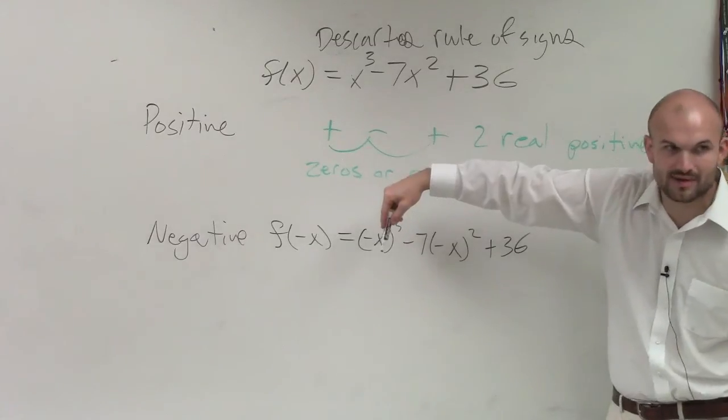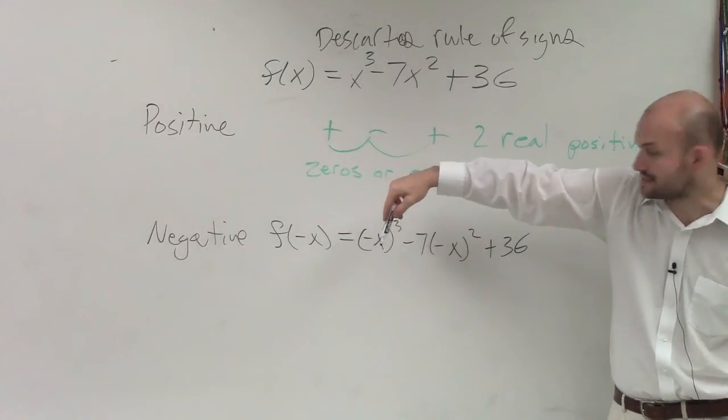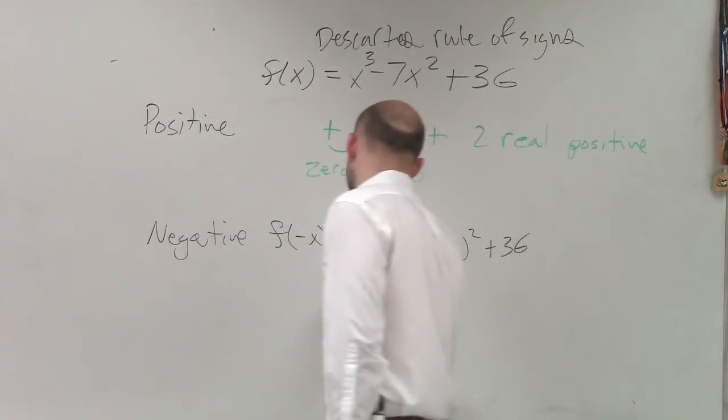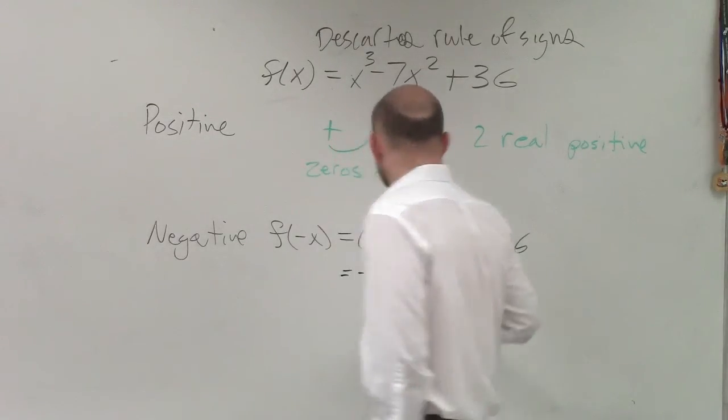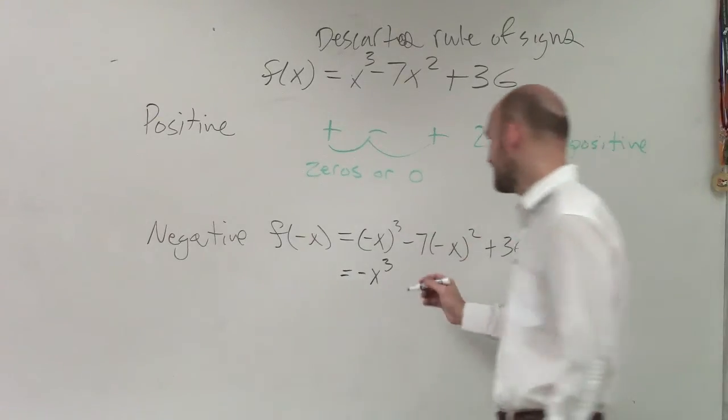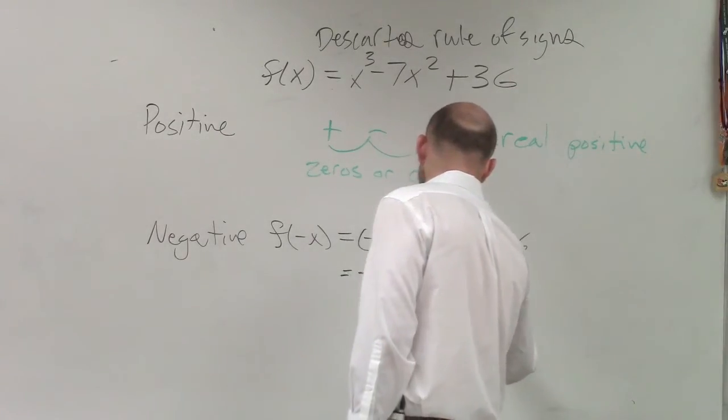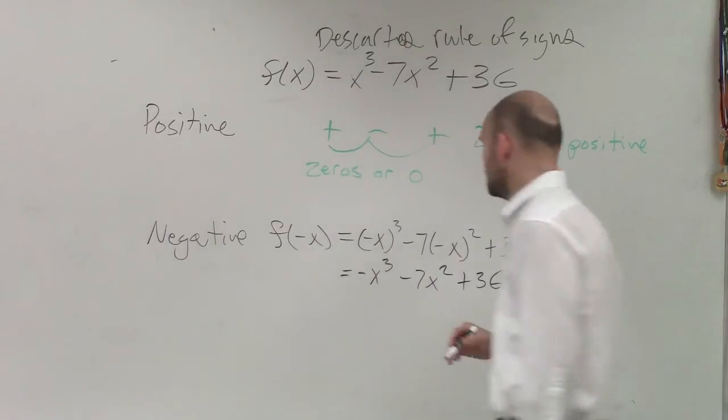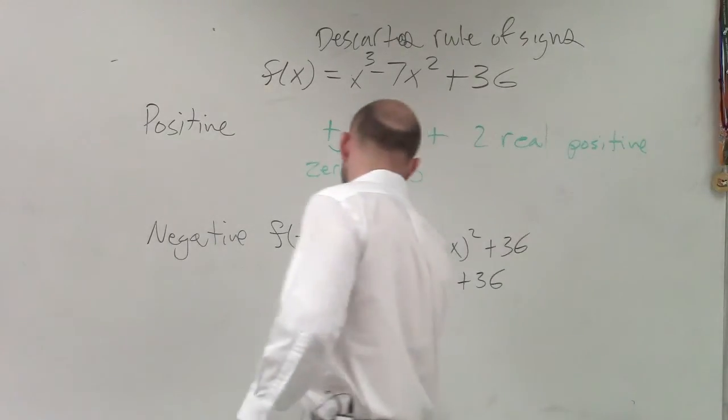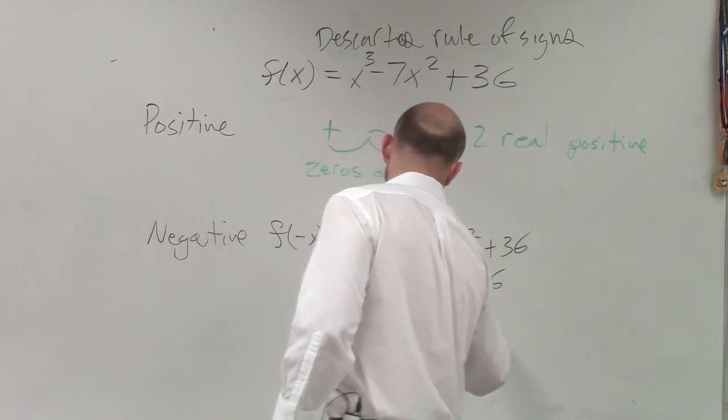So any negative number, it doesn't matter if it's a variable or a negative decimal, any negative number raised to an odd power is still going to be negative. Any negative number raised to an even power is going to turn positive. Positive times negative is negative, 7x squared. Then again, I bring down the signs. Negative, negative, positive.